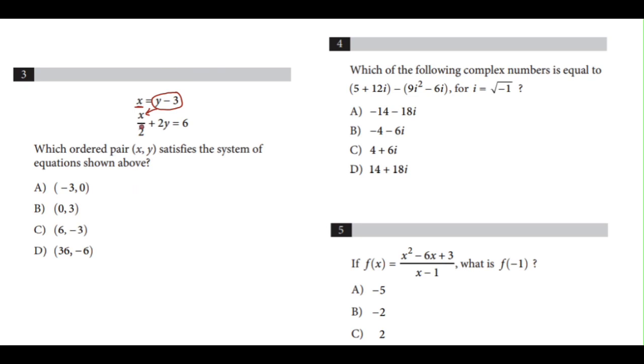So for the equation in the bottom, instead of x, we're going to plug in what x is equal to, which is y minus 3. To get rid of this denominator of 2, we're going to multiply everything by 2. 2 times the first term gets rid of the denominator and leaves us with y minus 3. 2 times the second term gives us plus 4y, and 2 times the last term, 2 times 6 is 12.